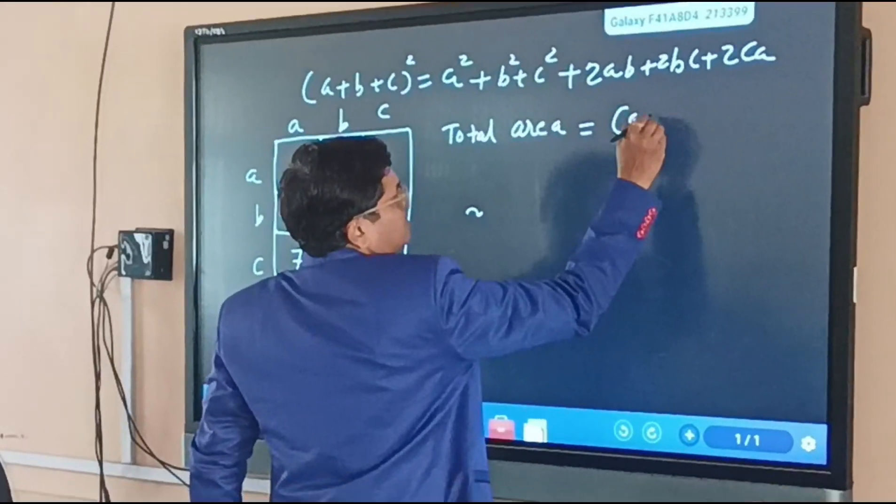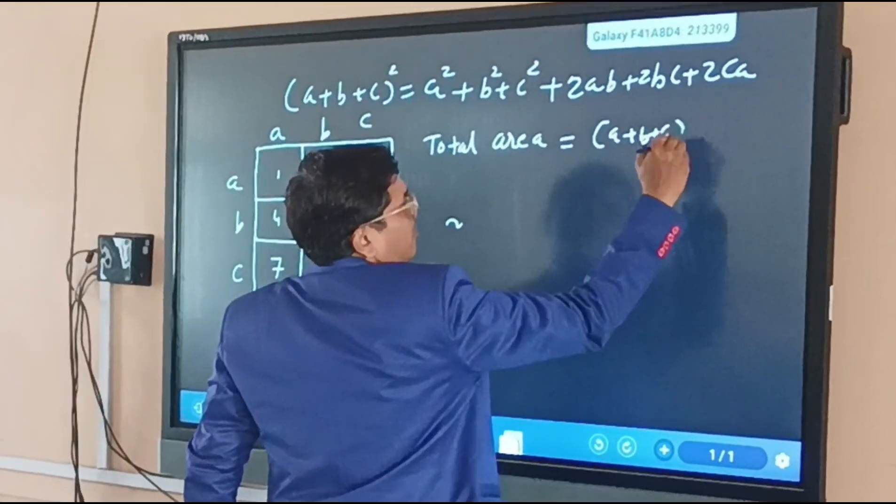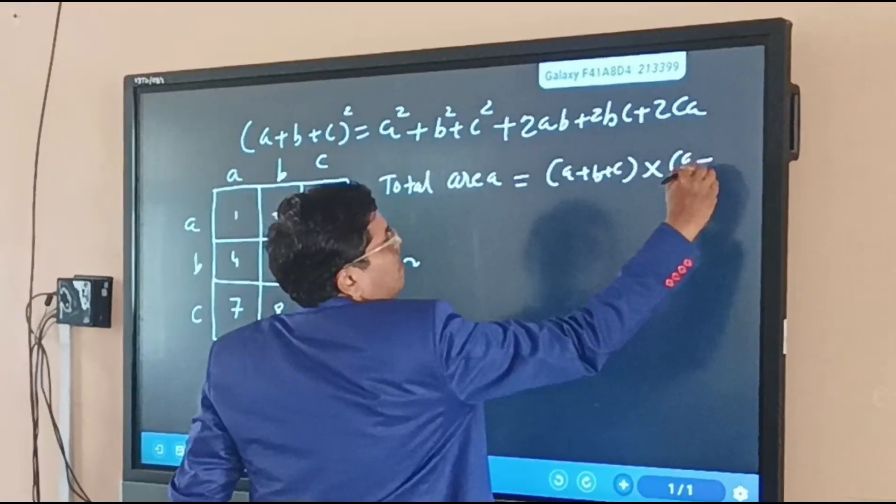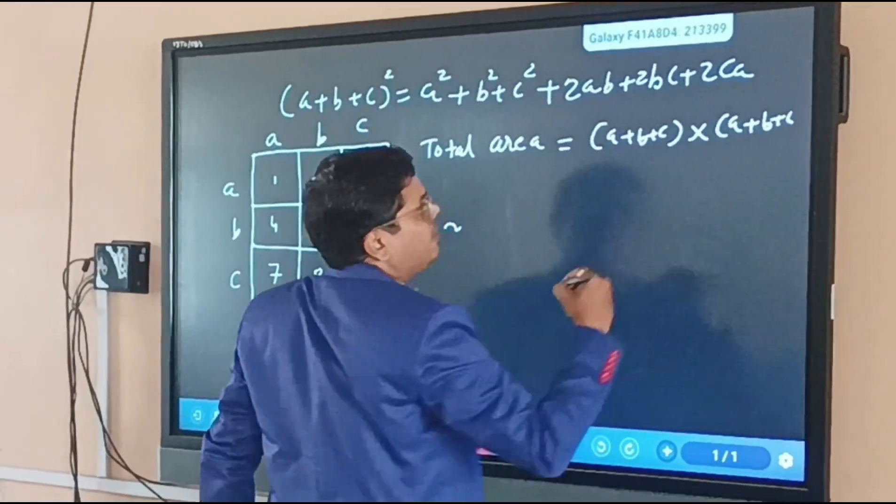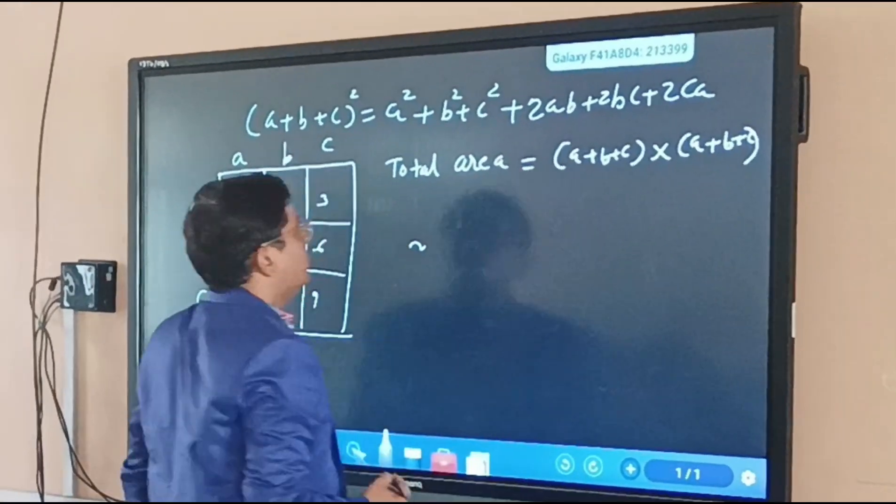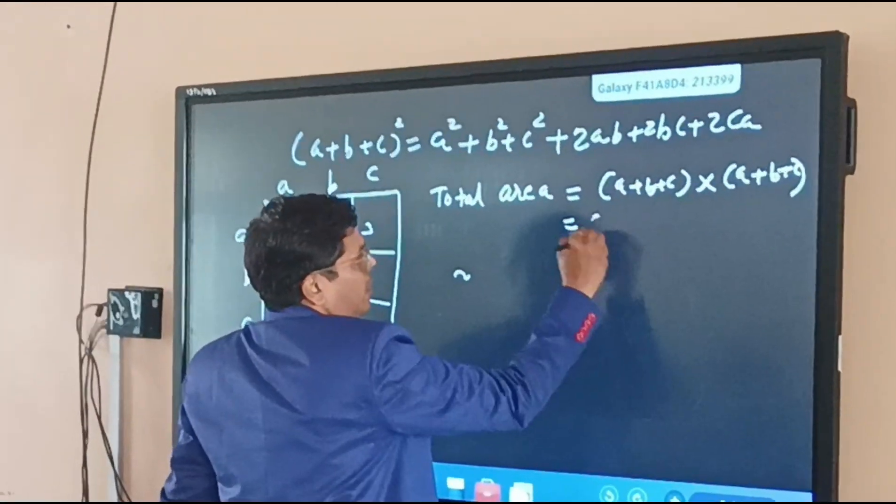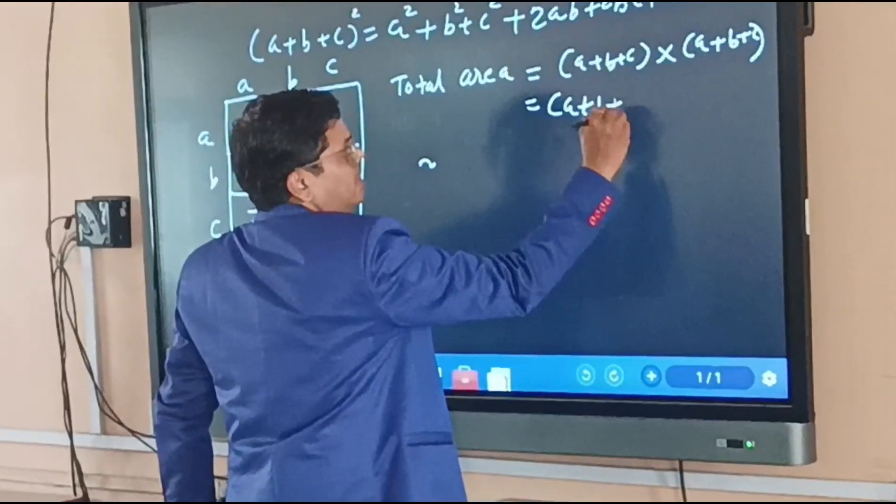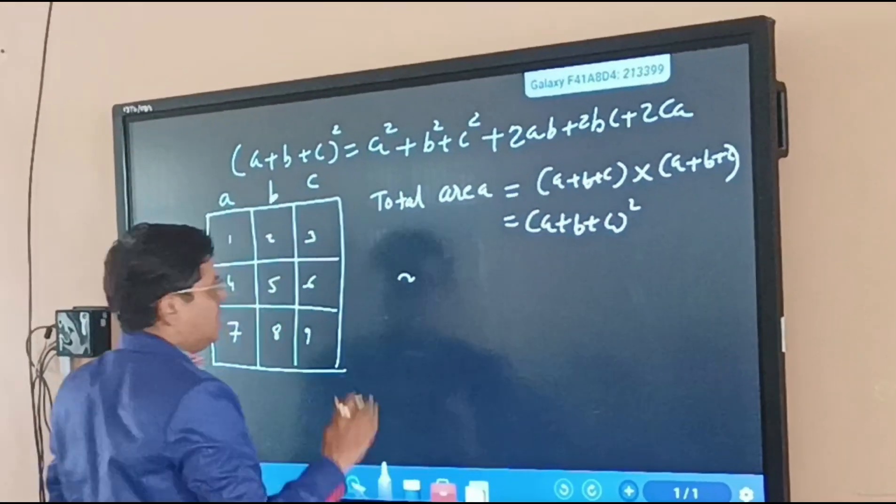it is now a plus b plus c into a plus b plus c. So the area will be a plus b plus c squared because of multiplication of them. Now we will find the total area.